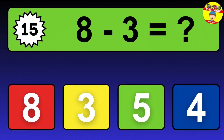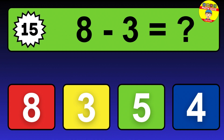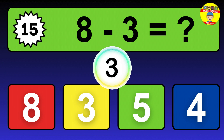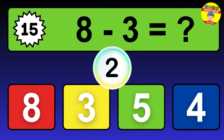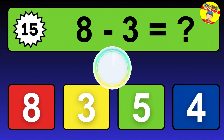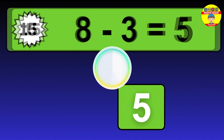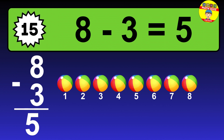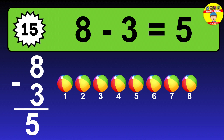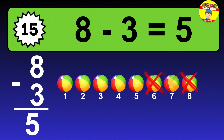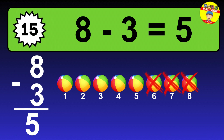Question 15. 8 minus 3 equals what? The answer is 8 minus 3 is 5. Let's count it: 1, 2, 3, 4, 5.